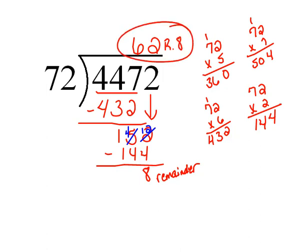Now when we check things with a remainder, we have to do it just one more step. First thing we're going to do is multiply the 62 times the 72. So I'm going to do that here on the side. 2 times 2 would be 4, 2 times 6 would be 12, and then multiply 7 times each of the digits. 7 times 2 would be 14, 7 times 6 would be 42, plus 1 is 43.